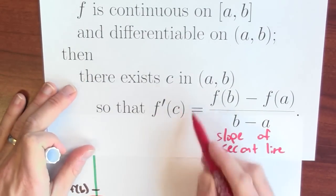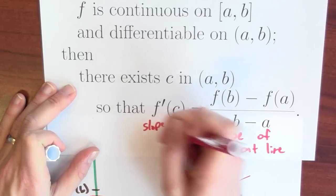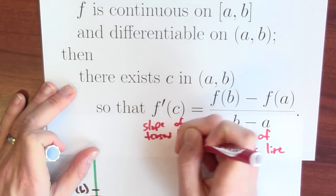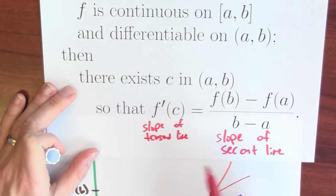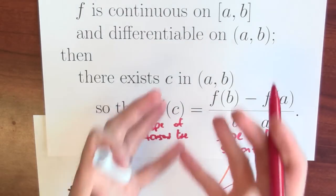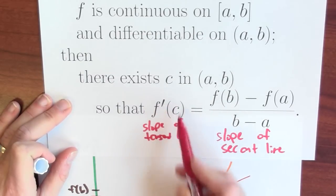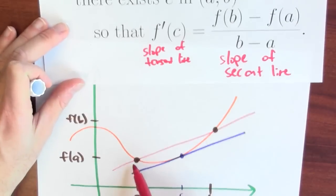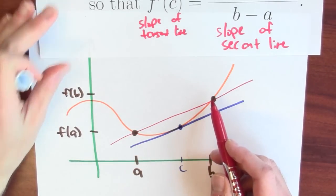In the statement of the mean value theorem, f'(c) is the slope of the tangent line to the graph of the function at the point c. The statement is asserting that the slope of the tangent line at some point in between is equal to the slope of the secant line between (a, f(a)) and (b, f(b)).